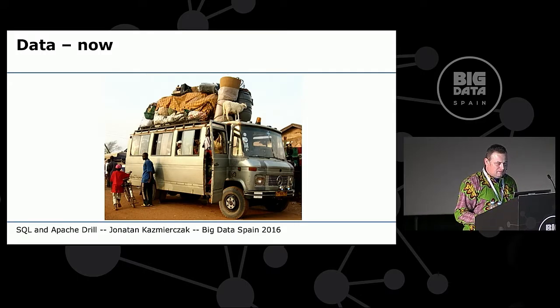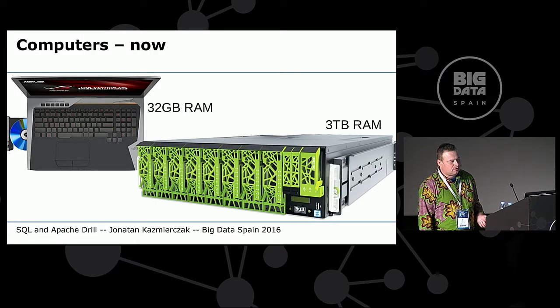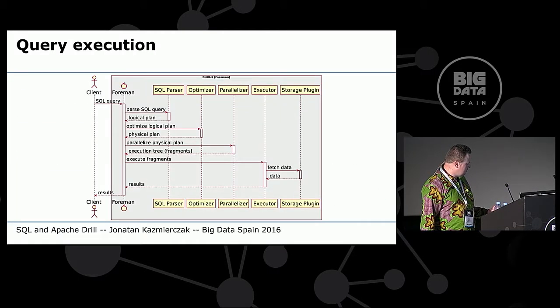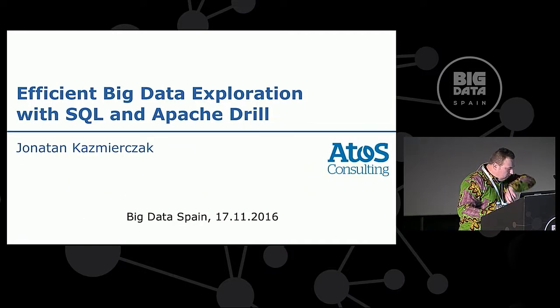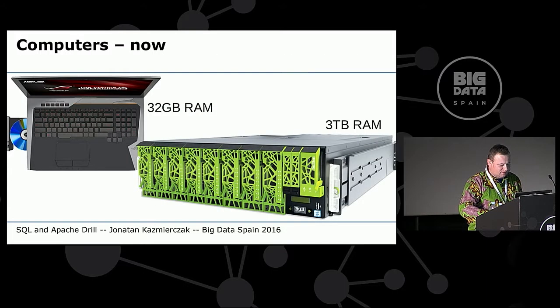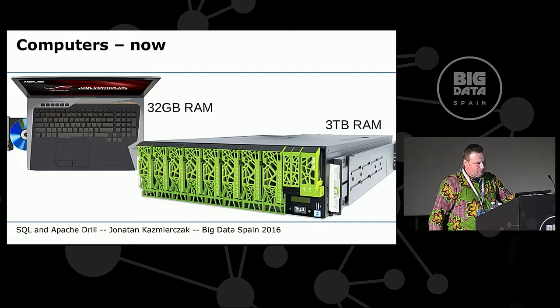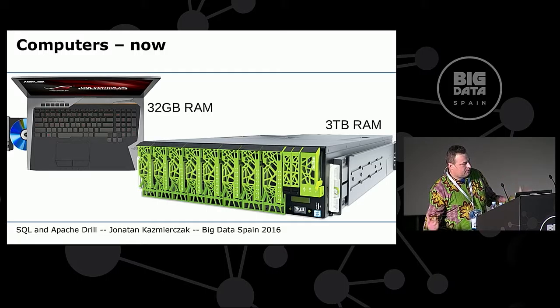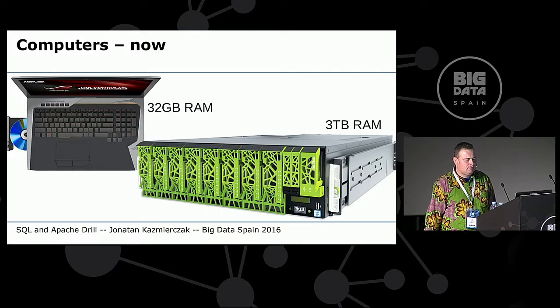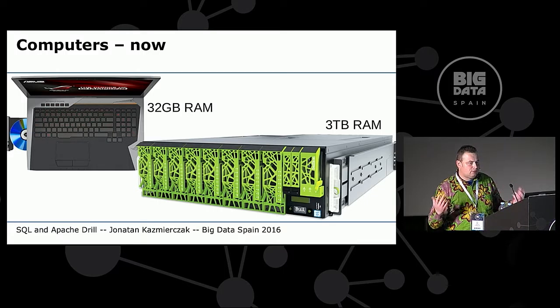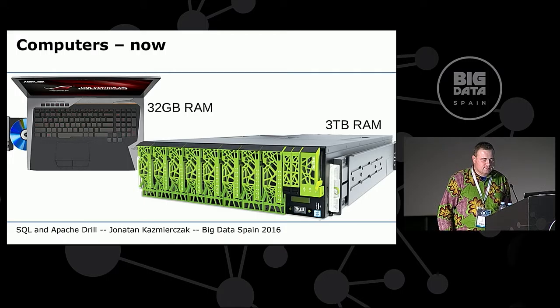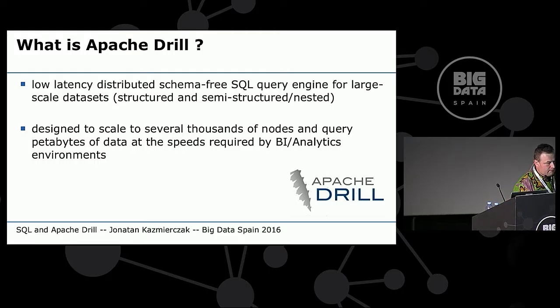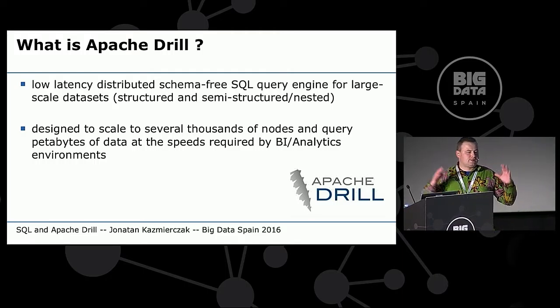But the times changed. And now the data looks like this. We have a big mud of data. And picking the correct information is not as easy as before. But we also have better computers. 32 gigabytes is quite a standard, or even we have computation units with three terabytes of RAM. And with a lot of memory we can do a lot. Why are we talking at all about memory? Because we would like our data to fit into memory in order to process them quickly. And that's what Drill does.